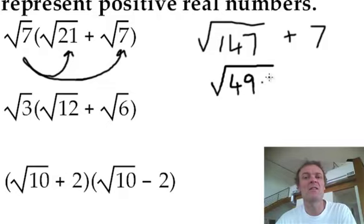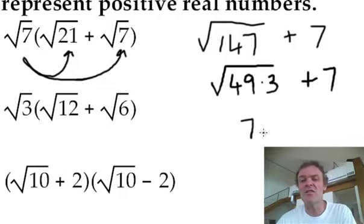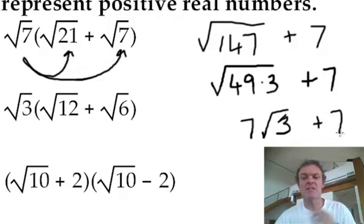147 is 49 times 3. Still got that 7. Okay, what's a square root of 49? That's 7. You're still left with the root 3. You're still left with a 7. And that's it.